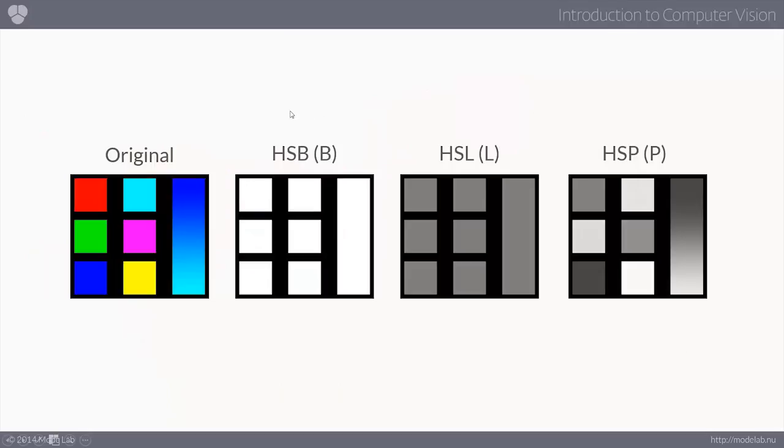The HSB model, remember, takes the maximum value and divides it by 255, which gives us a value of 1, because red is 255. So in this case, all of these values, the brightness is always going to be the same, and it's going to be pure brightness.